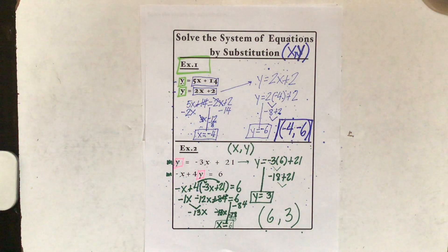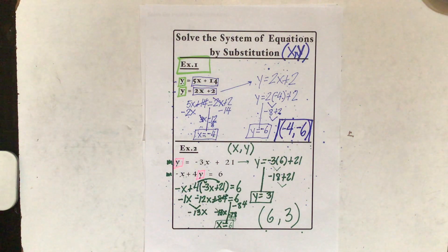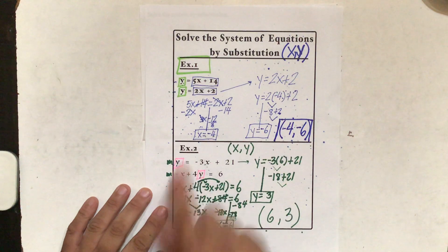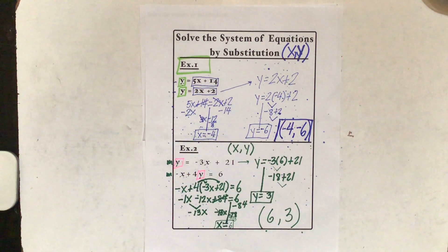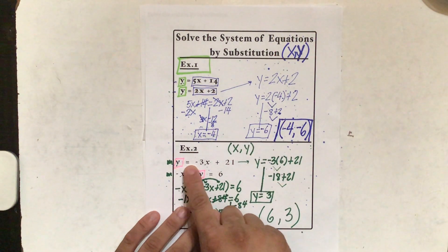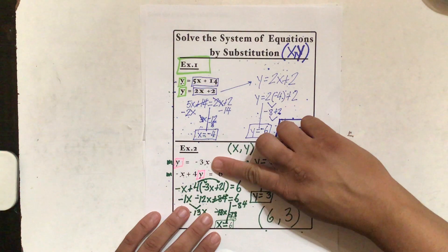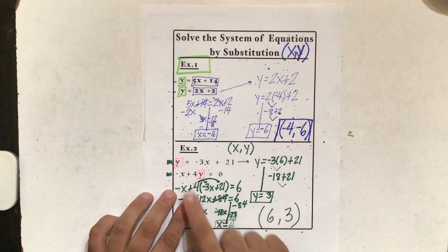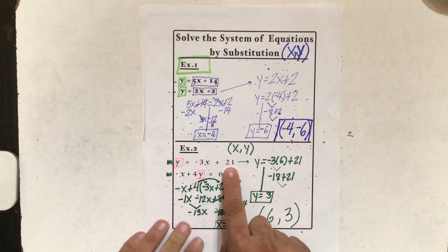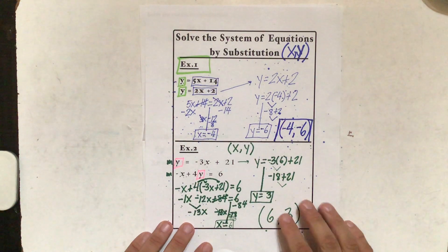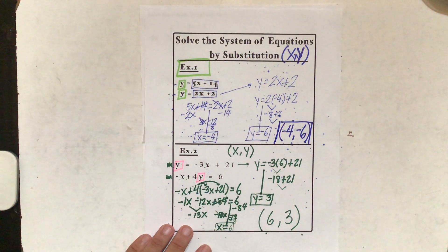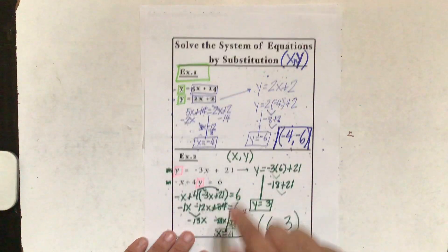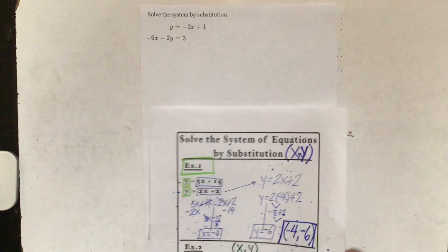All right, everyone. Today we're going to cover some more substitution. In this substitution, we're going to cover these types of example two. In the previous assignment, we did example two, but it was a little different where y was equal to only negative 3x, or x is equal to 4y — something short with only one term. Here it's two terms, which is what we did on this assignment. But we're going to do more examples like these on this assignment today.